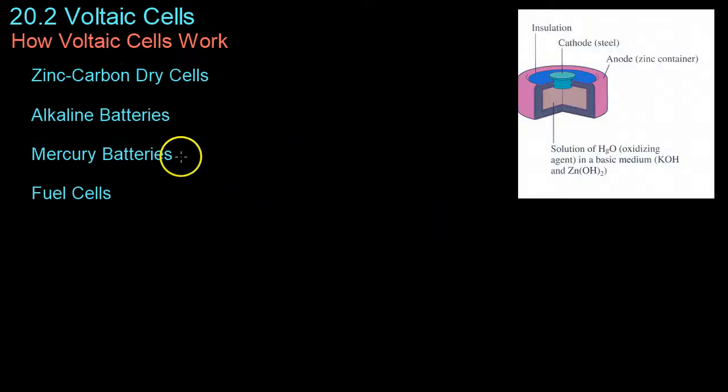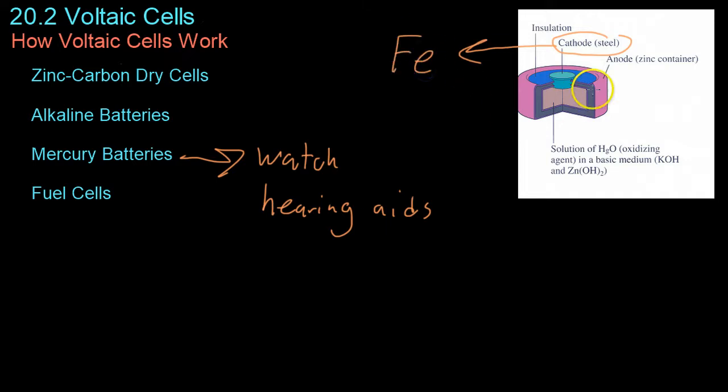Moving on to mercury batteries, these are the small batteries you normally find in watches or hearing aids. You can see it has a steel cathode, so it uses iron. Then the anode is once again zinc.